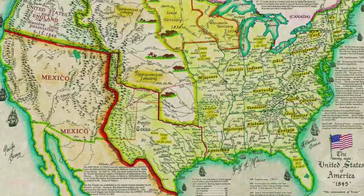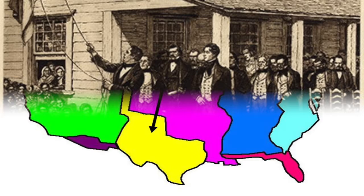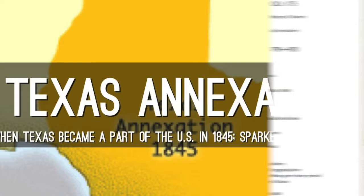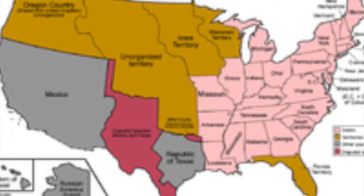Kentucky Senator Henry Clay proposed a new compromise, which had four parts. The first part was that California would enter the Union as a free state. The next part was the status of slavery in the rest of the Mexican territory would be decided by the people that lived there. Another was that the slave trade, but not slavery, would be abolished in Washington, D.C. Last, there would be a new Fugitive Slave Act that would enable Southerners to reclaim runaway slaves who had escaped to the northern states where slavery was not allowed.